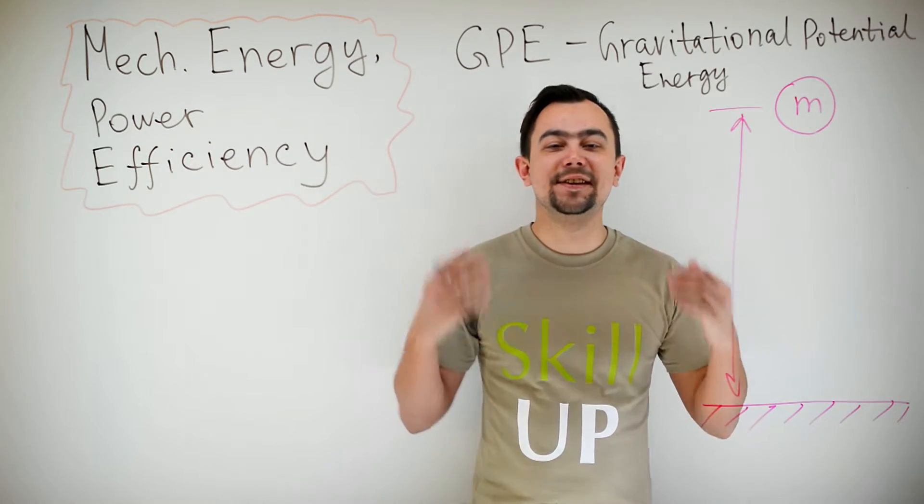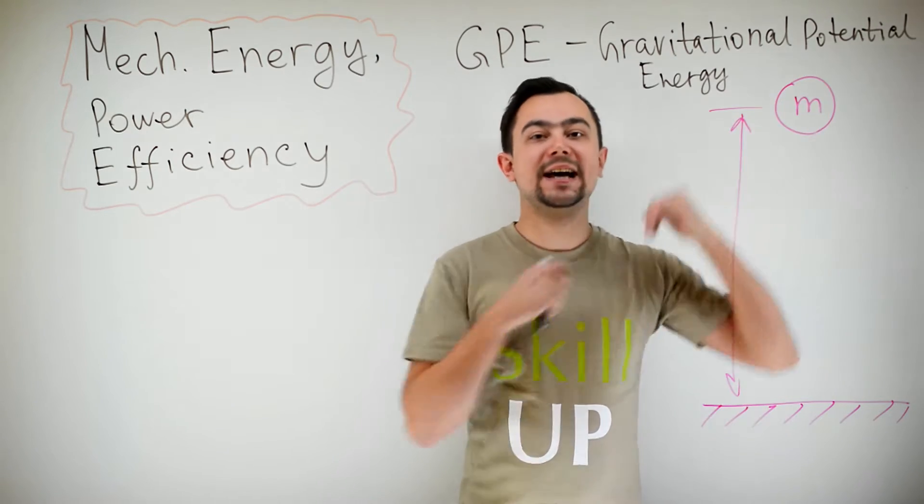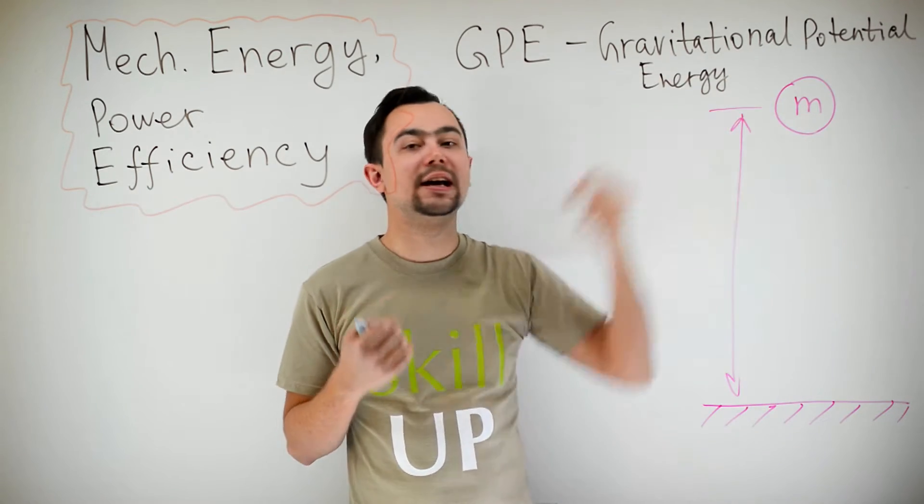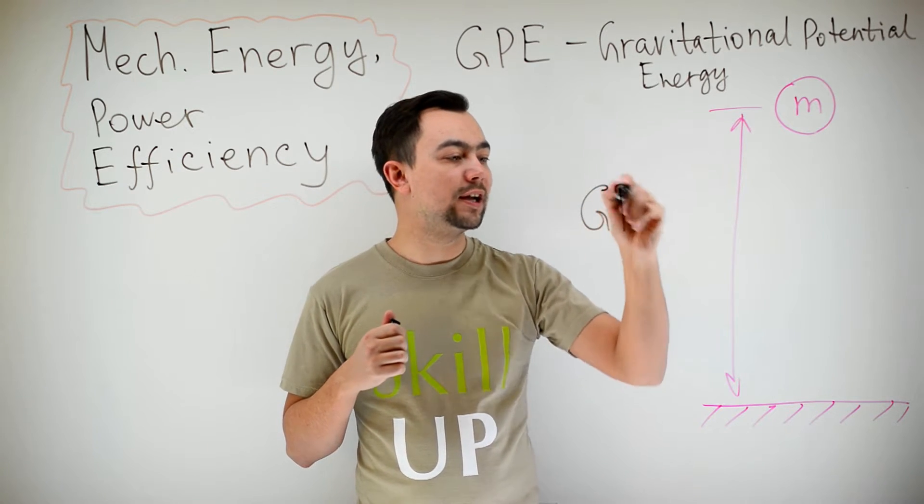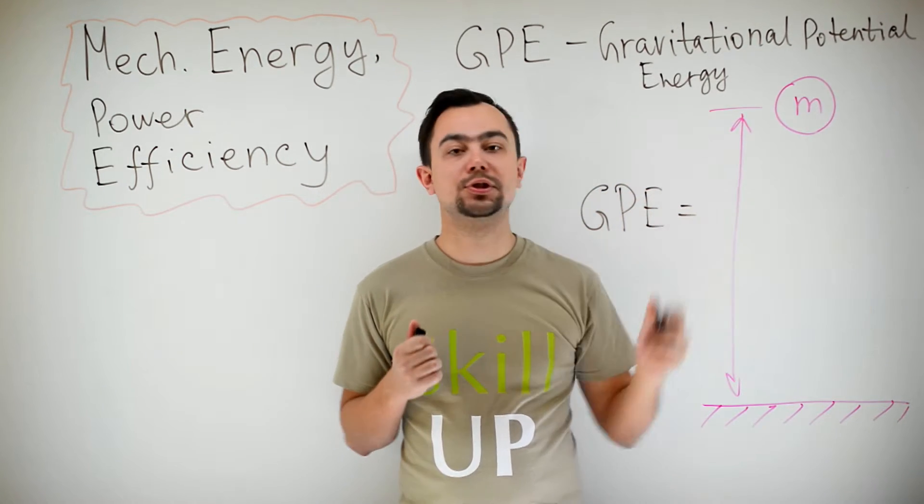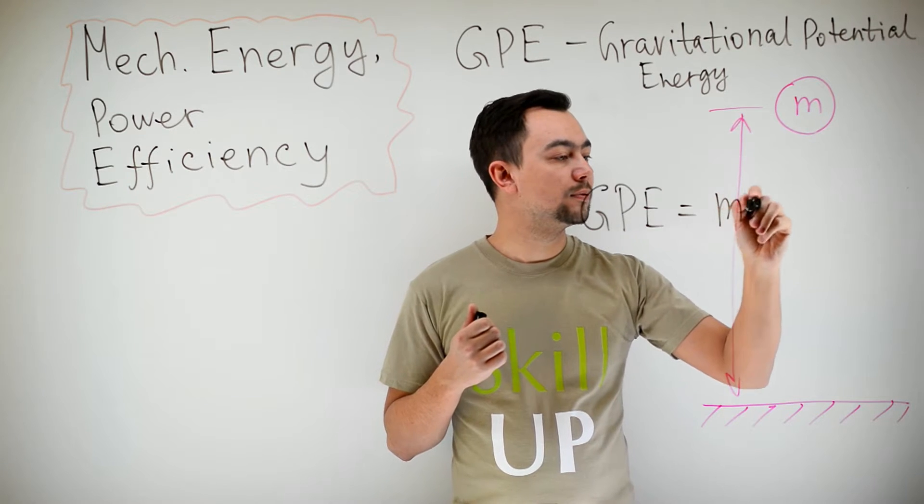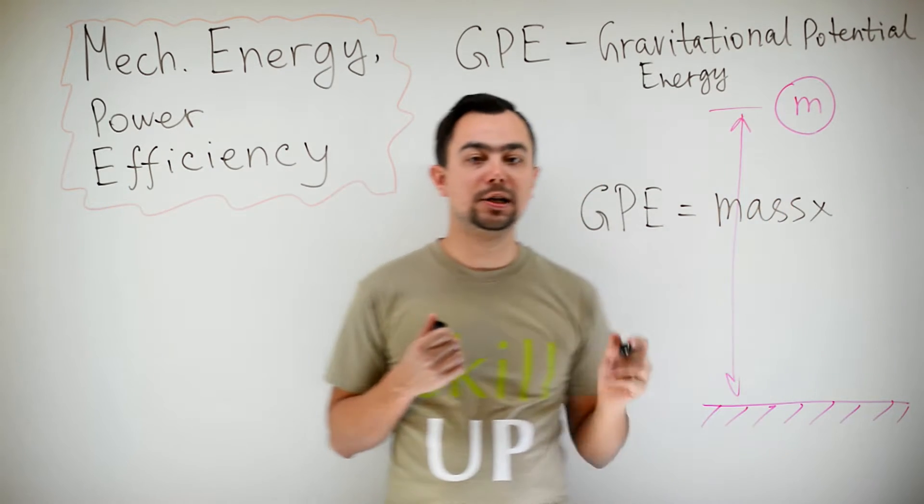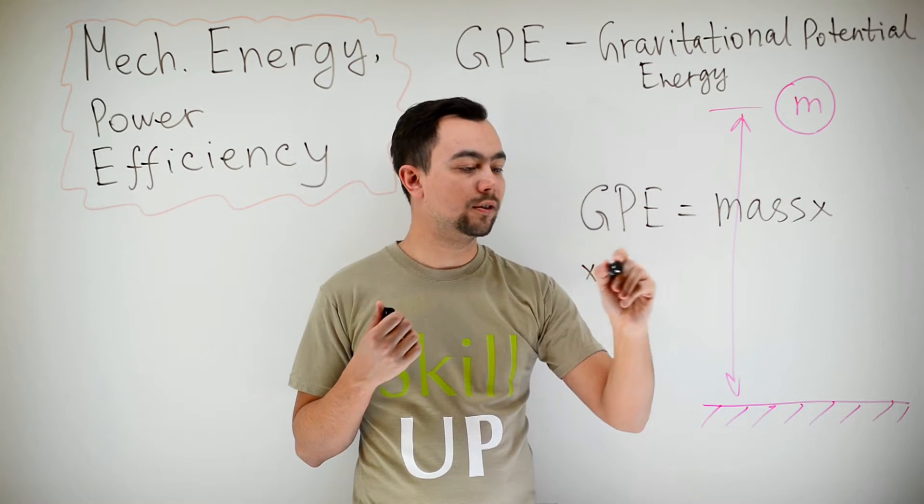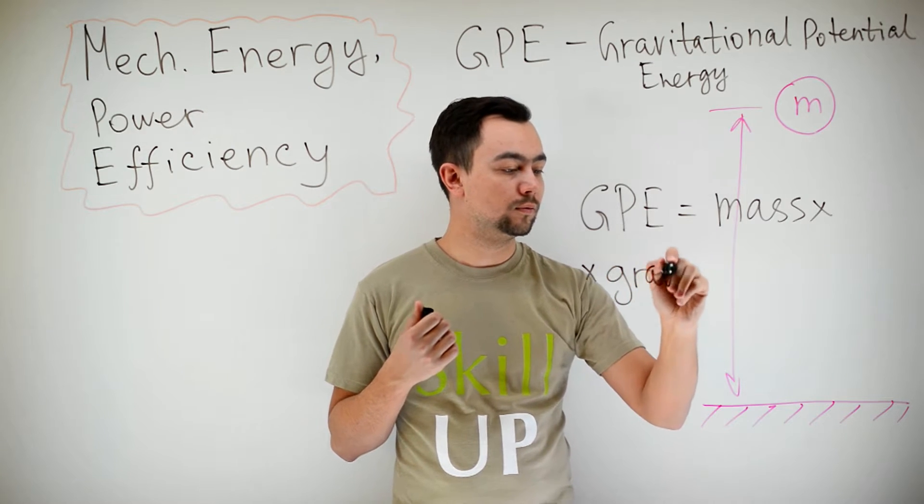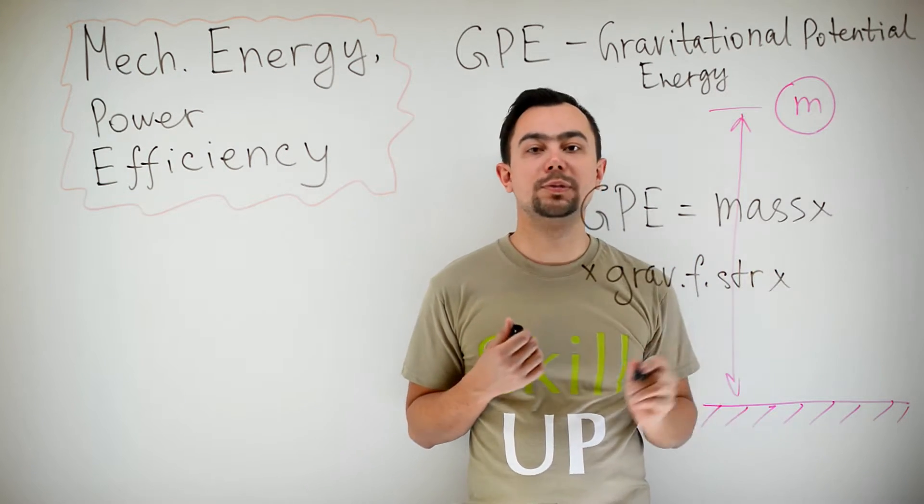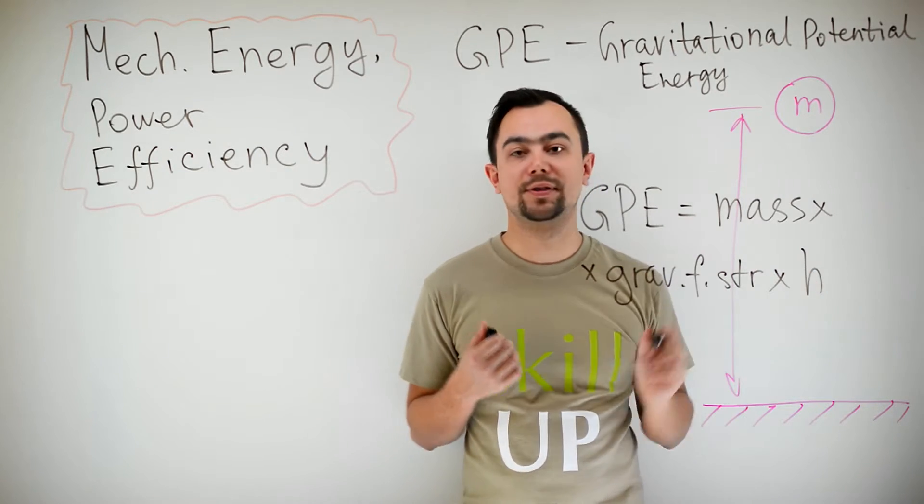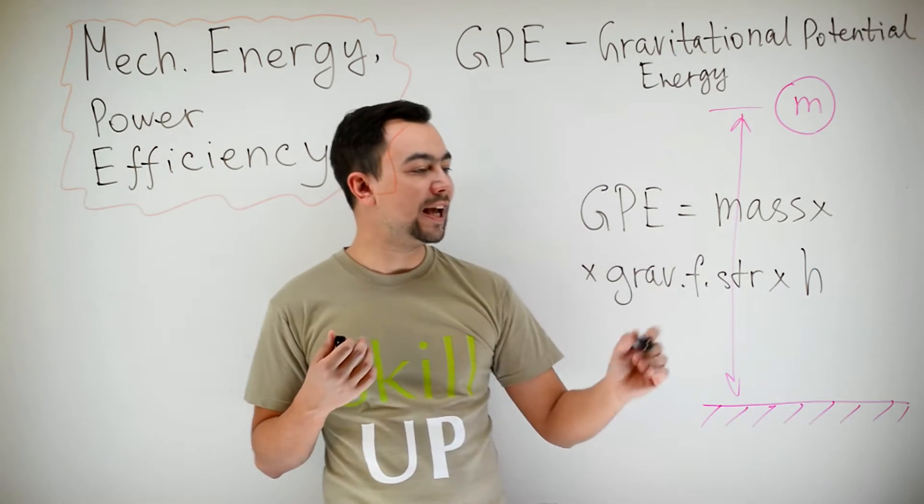If a body is lifted above the ground it has gravitational potential energy or GPE. Gravitational potential energy is equal to mass multiplied by gravitational field strength and multiplied by height above the ground, or simply MGH.